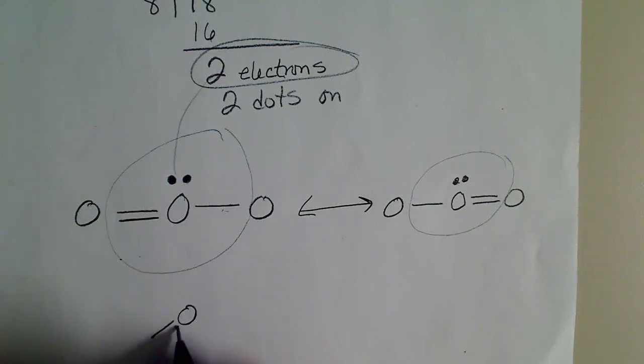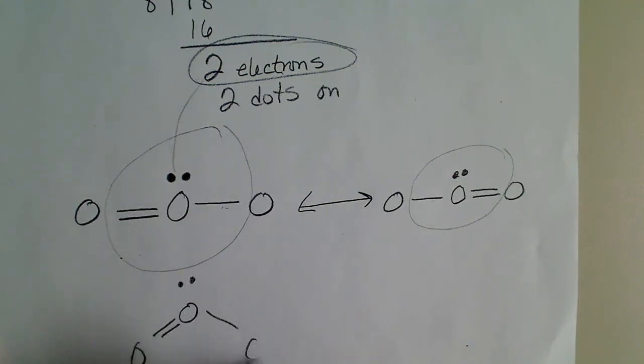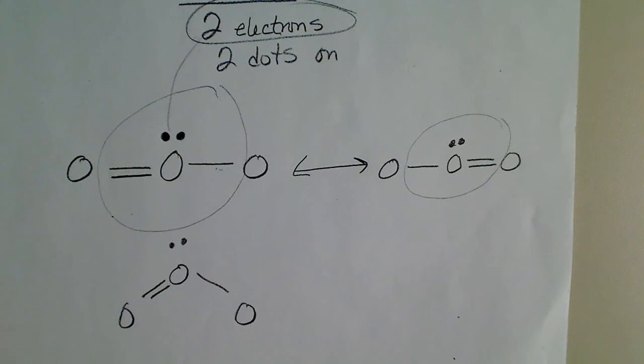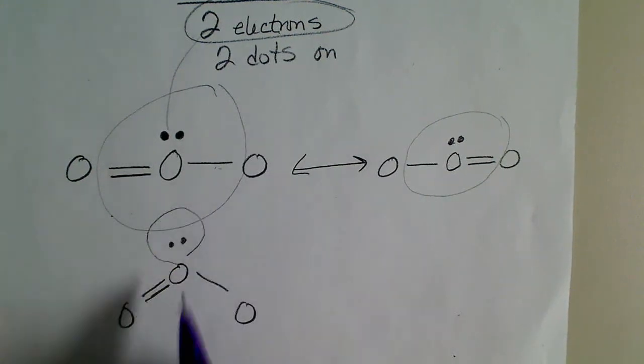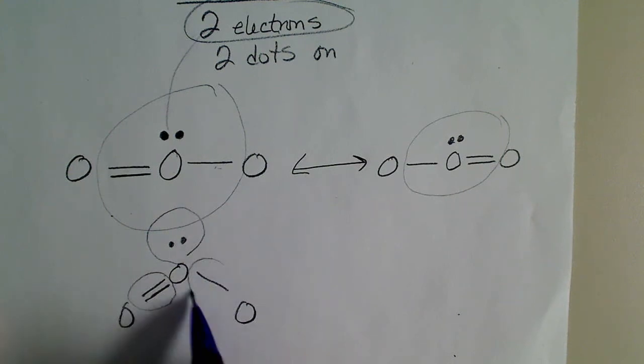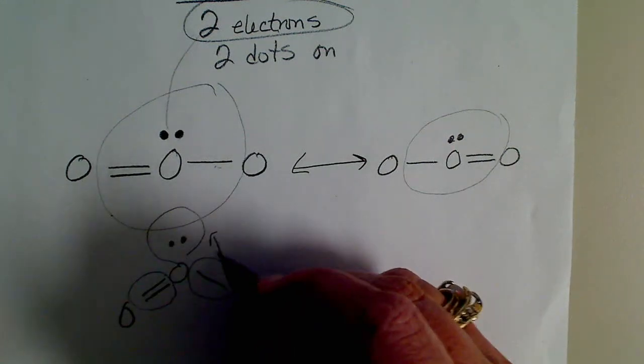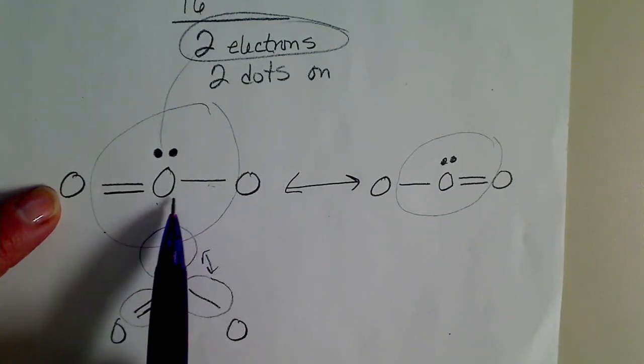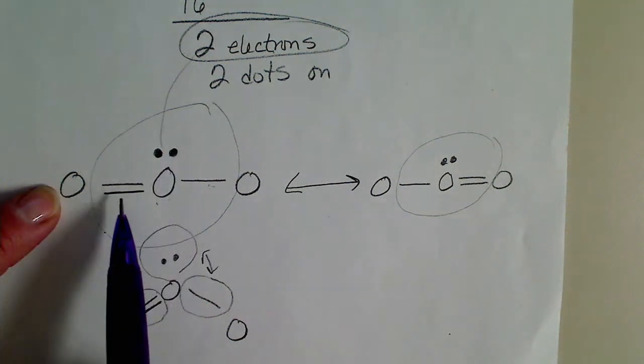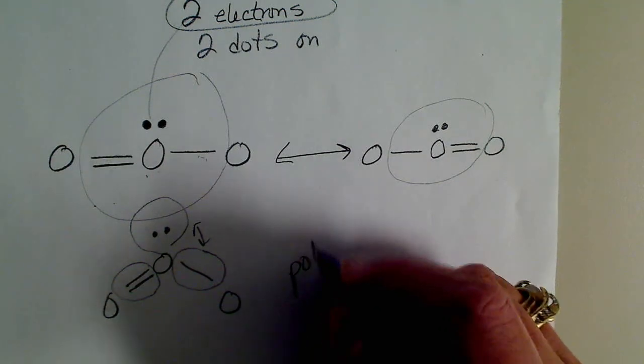Our dot structure may not reflect the shape of the molecule, but that's coming up in further videos. All these electrons - that group, that group, and that group - all the electrons are going to repel each other and maximize their angles between them. Nonetheless, if this is drawn in a linear fashion, that's fine to count groups of electrons around the central atom.